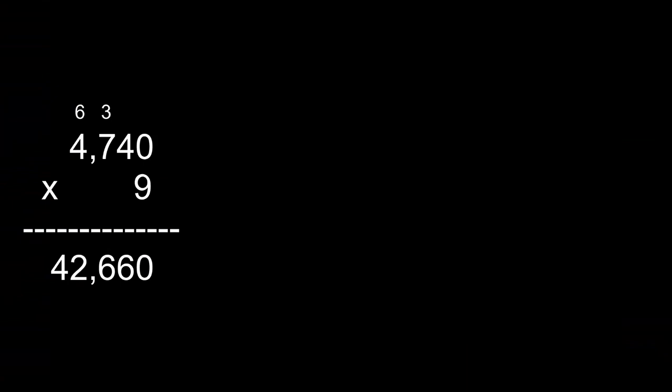Pon el video en pausa y resuelvan el problema. Ahora vamos a practicar uno que tenga dos dígitos arriba por dos dígitos abajo. Recuerden que el algoritmo sigue siendo el mismo. La única diferencia es que van a multiplicar el primer numerito por los dos de arriba y después van a pasar al segundo, a las decenas del número de abajo y lo van a multiplicar por los dos números de arriba, tal y como lo hicimos en el salón.